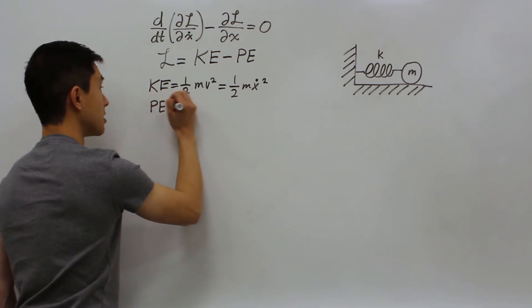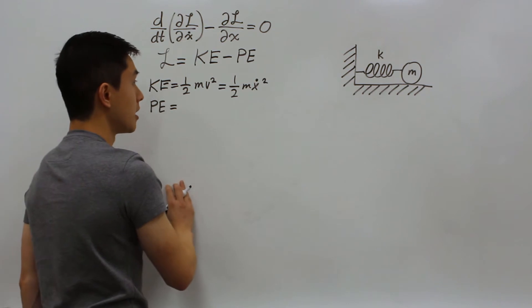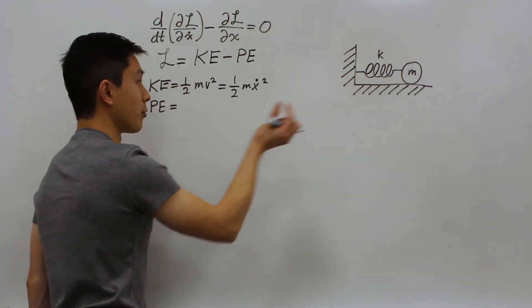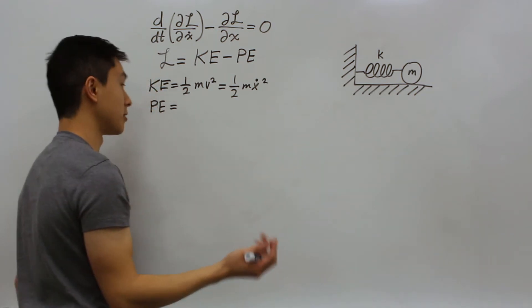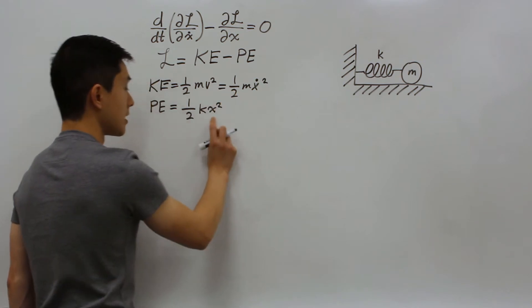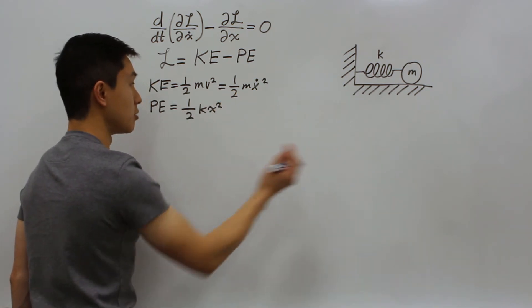Next we want to find the potential energy of our system. Our potential energy is only going to be consisting of the spring, deforming either in one direction or the other direction, which stores potential energy. The equation for spring's potential energy is 1 half kx squared, as x is just the distance it's displaced from its neutral point.